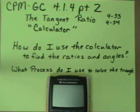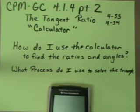Welcome to the second half of 4.1.4. This is the one where we are going to use the calculator. And we are going to make a few little changes. The big question is today, how do I use the calculator to find the ratios and angles? And what process do I use to solve for the triangle?